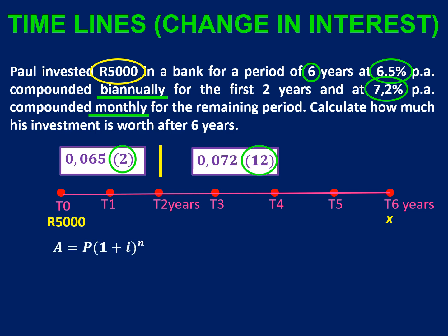Alright so this is normal compound interest. So we're going to start with that five thousand rand and put it in the bank for two years. Now it's compounded biannually so divide your interest rate by two and multiply your years by two. And if you do this calculation it's actually going to be the P-value for your next calculation.